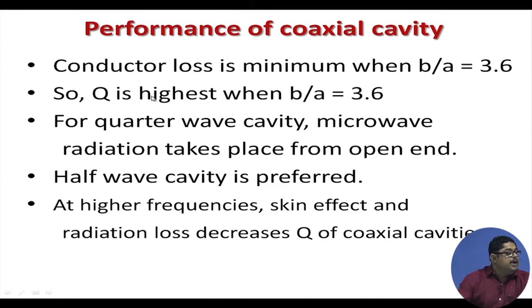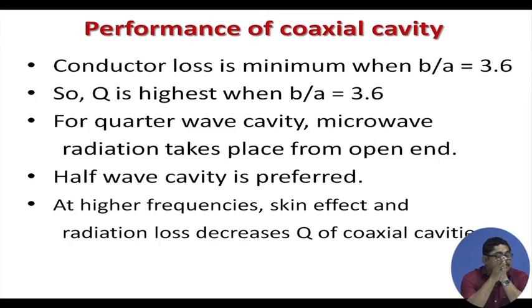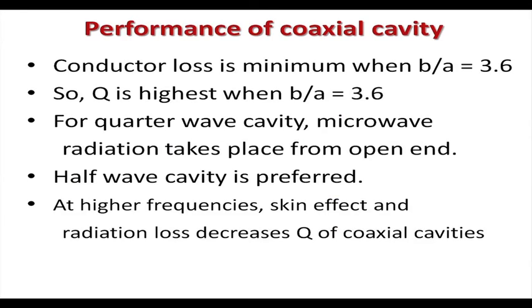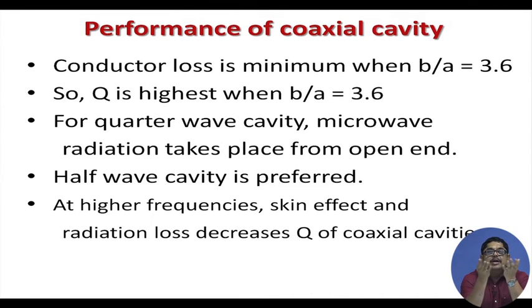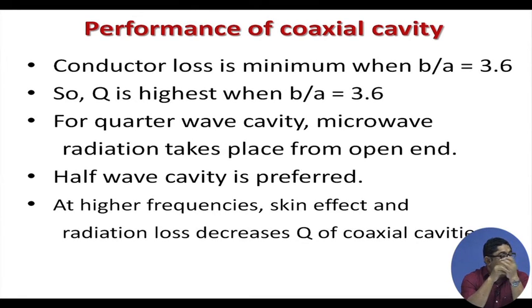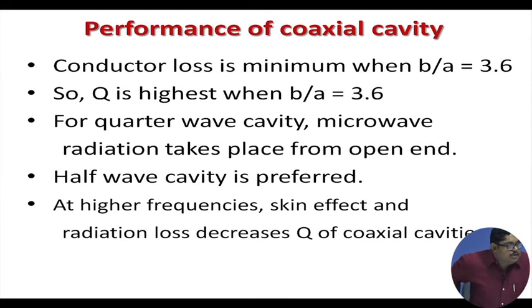Regarding performance: conductor loss in a coaxial line is minimum when b/a = 3.6, as we saw when studying coaxial connectors. Since Q's denominator is energy dissipated, the highest Q in a coaxial line is achieved when b/a = 3.6. So you can choose b/a = 3.6 to get the highest Q, and from any particular design you can find out how much Q you can get.